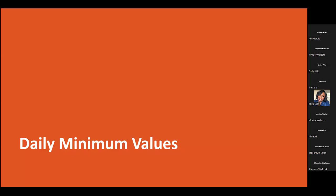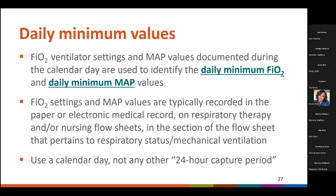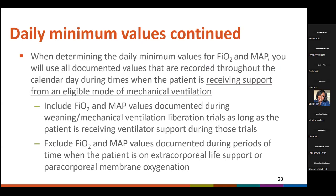Now that we've defined the key terms of FiO2 and MAP, let's talk about their use in PVAE surveillance. The first step in PVAE surveillance is to determine the daily minimum values for FiO2 and MAP. You start by reviewing the FiO2 and MAP values that are documented in the patient's medical record during the calendar day. Be sure to use a calendar day and not any other 24-hour capture period.